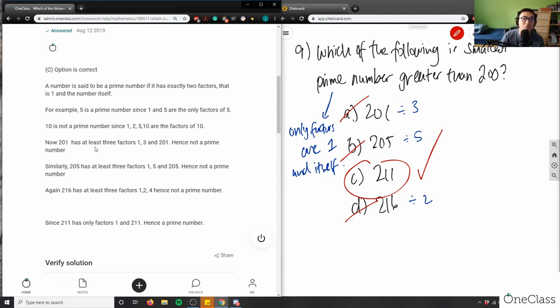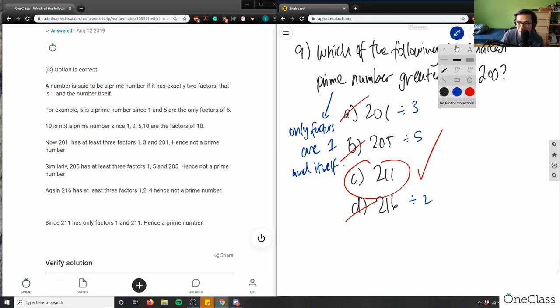Now, 201 has at least three factors, 1, 3, and 201. Basically, how they figured that out was they used my little cheat here.